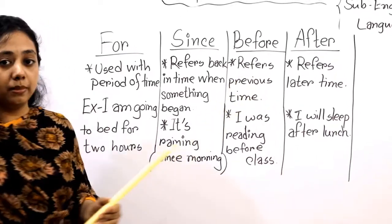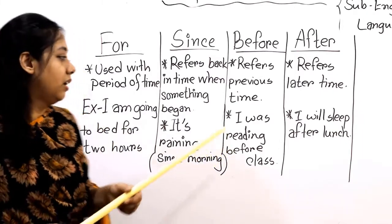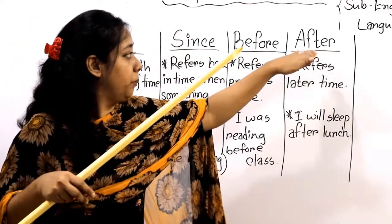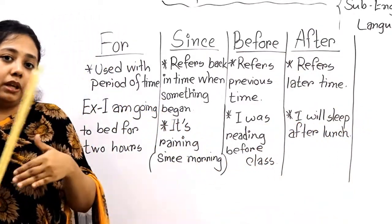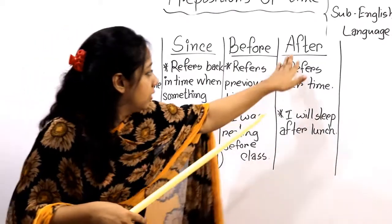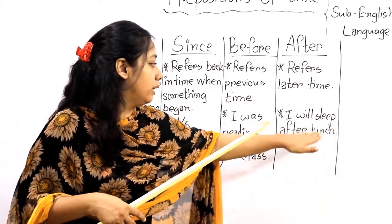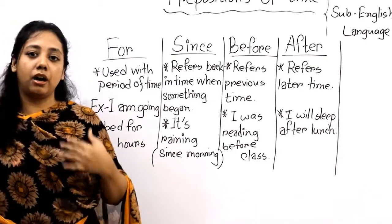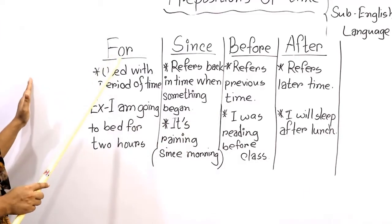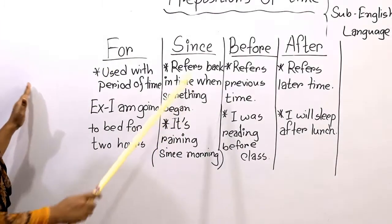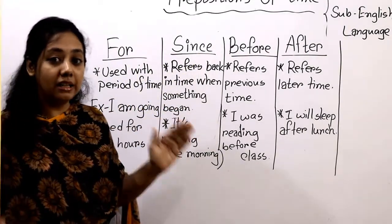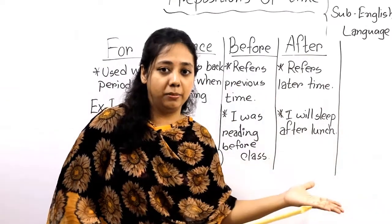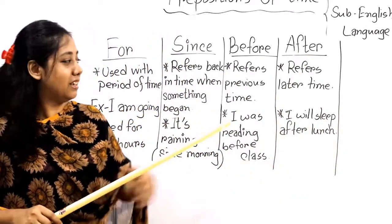'Before' refers to previous time — like I was eating before the class, or I was running before the class. 'After' means a later time — like I will sleep after lunch, I will eat after the class, or I will wash my face after the class. So: 'for' means specific time, 'since' sits before indefinite time, 'before' refers to previous time, and 'after' refers to later time.